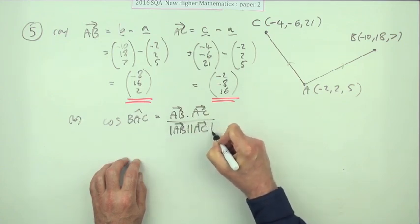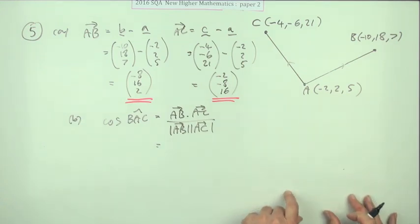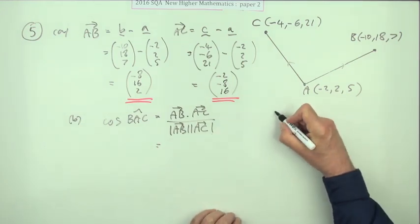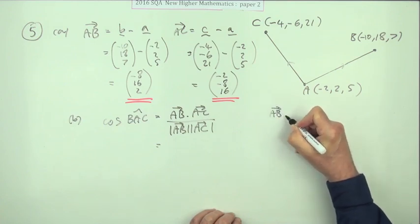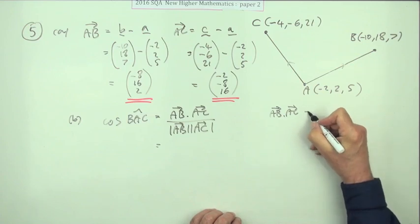In other words, using the components divided by the magnitude of AB times the magnitude of AC. Now you can feed it all in here or you can work them out separately. I normally feed them all in but I'll work them out separately.